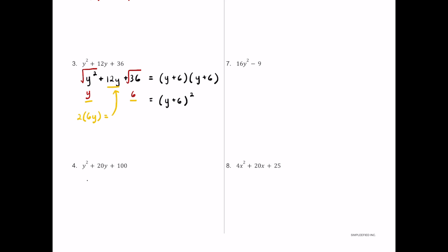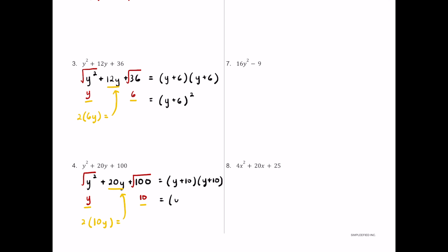For number four we have y squared plus 20y plus 100. This is another perfect square trinomial. The square root of y squared is y and the square root of 100 is 10. Multiplying y and 10 gives 10y, and doubling 10y gives 20y, which matches the middle term. So this factors into (y plus 10) times (y plus 10), which can also be written as (y plus 10) squared.